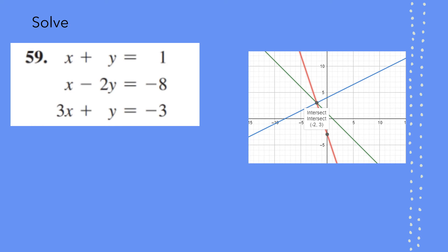But in this equation system, x plus y equal to 1, x minus 2y equal to negative 8, and 3x plus y equal to negative 3. When we graph this, it looks like there is a common point. And the common point of intersection is negative 2, 3. So negative 2, 3 becomes the solution to this system.